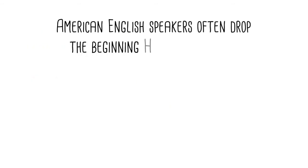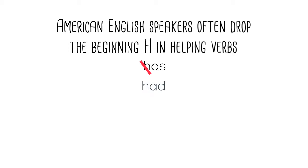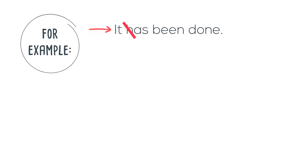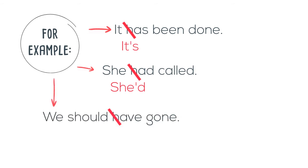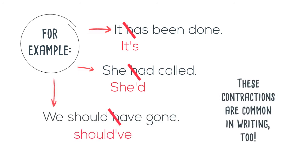American English speakers often drop the beginning H in helping verbs: has, had, have. For example: It's been done. She'd called. We should have gone. These contractions are common in writing, too.